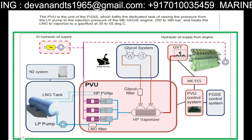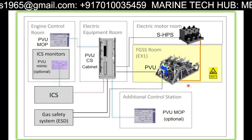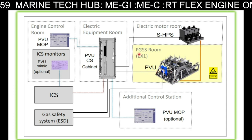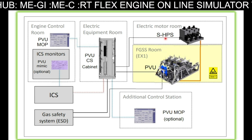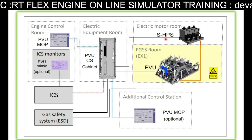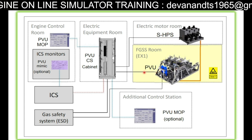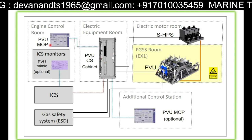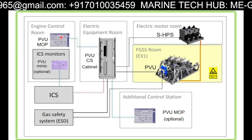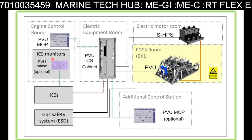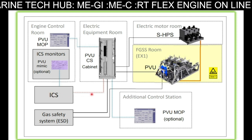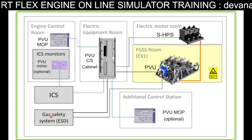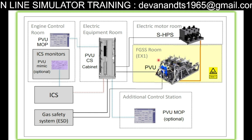On the next slide, we can see the full control layout. We have the PVU — pump vaporizing unit — and FGSS. There is also the SHPS — Stand Alone Hydraulic Power Supply — controlled by the PVU control system. This connects to the Electric Equipment Room and the MOB — main operating panel. Then we have the ICS — integral control system — attached to this. There is also ESD — emergency shutdown — so if any problem occurs, the gas safety system shuts down the system and the engine immediately changes from gas to fuel.